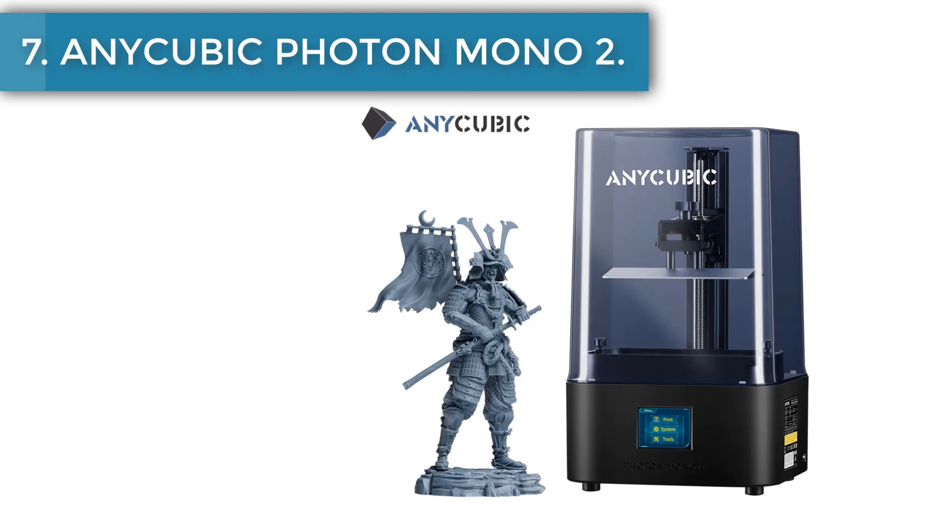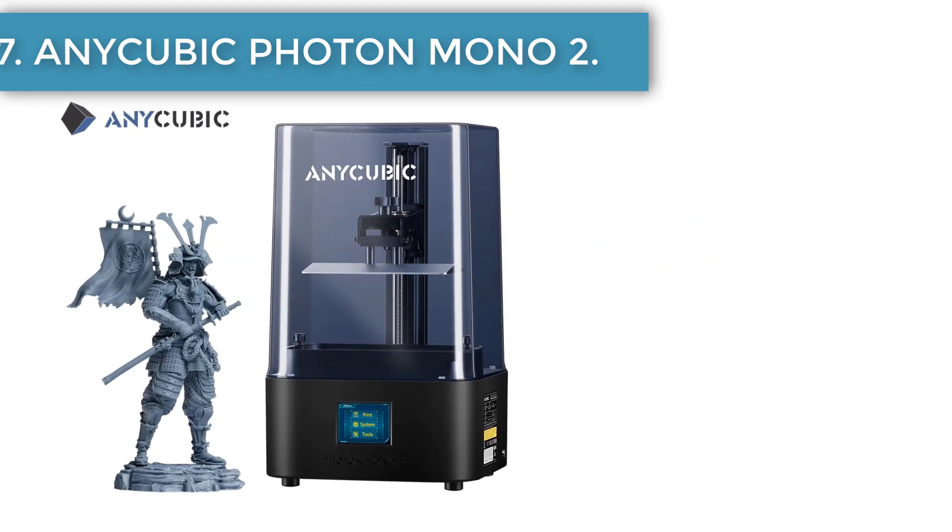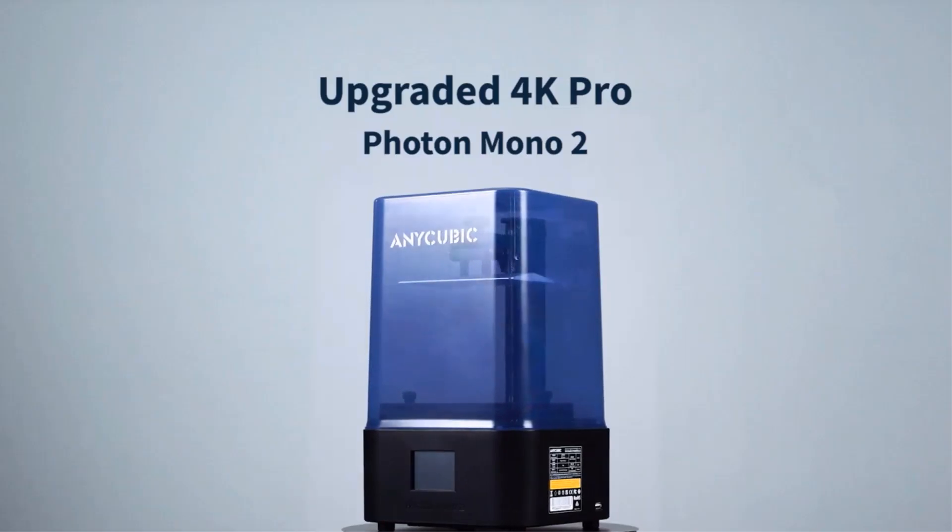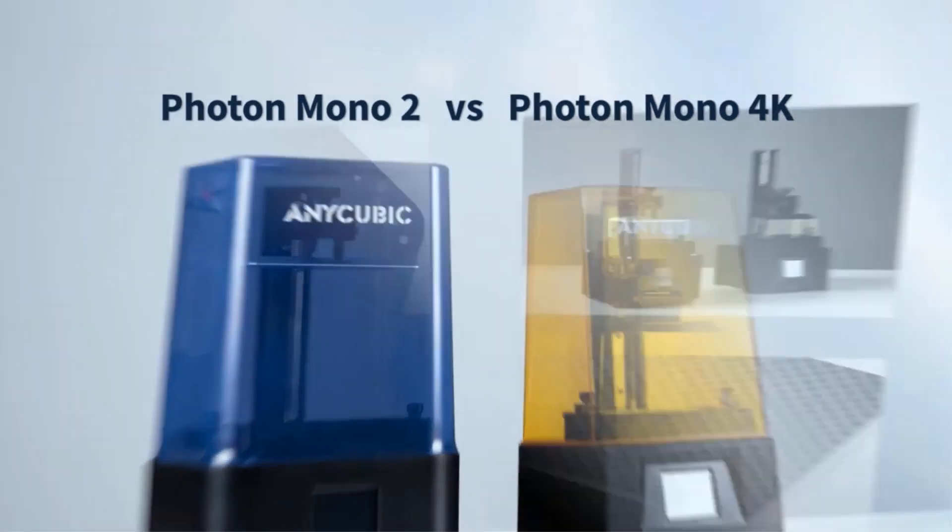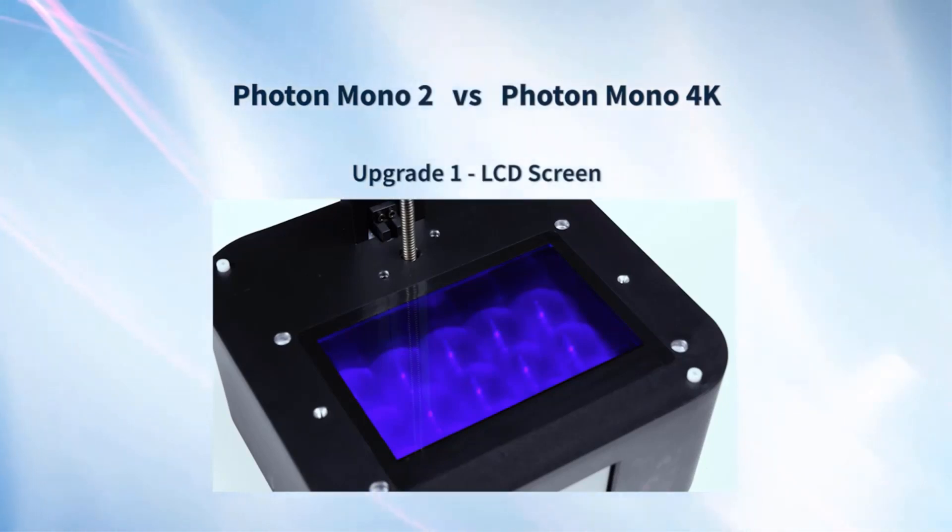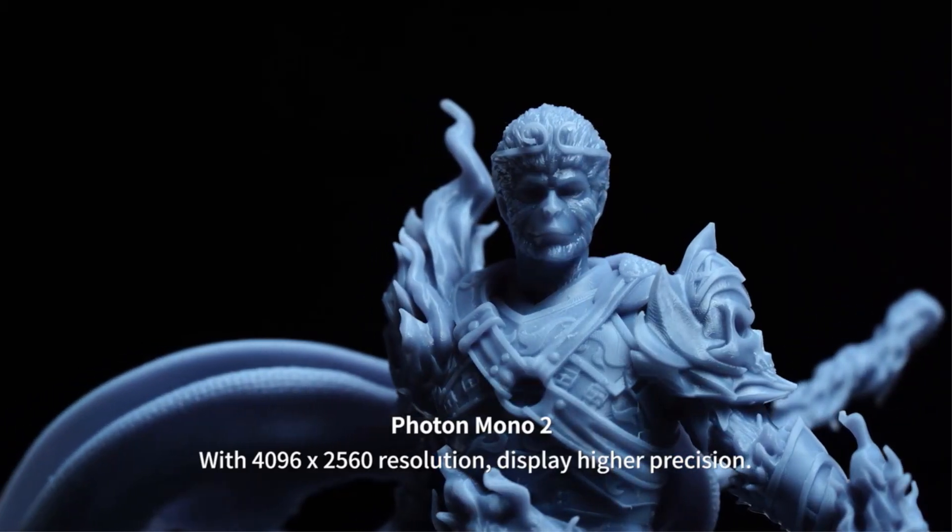Number seven, Anicubic Photon Mono 2. Previously we talked about FFF 3D printers manufactured by Anicubic, but their best-selling 3D printer, the Photon Mono 2, is the best solution for resin printing. Equipped with a 6.6-inch 4K LCD screen, it is suitable for beginners and professionals working on high-quality prototypes for industrial use.